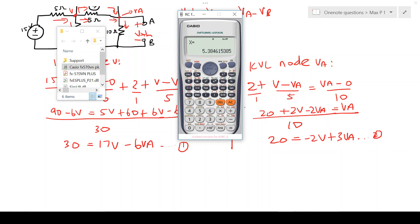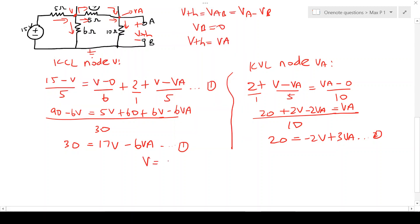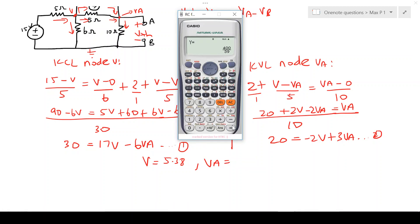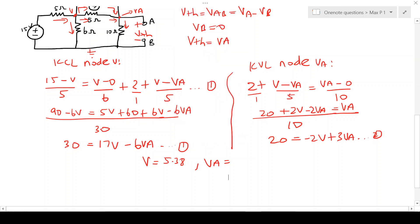And we get an answer: V equals 5.38 and VA equals 10.25. Our interest was VA because we know that Vth equals VA which is 10.25 volts.